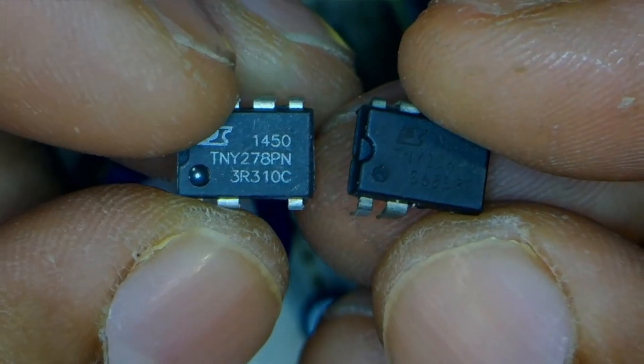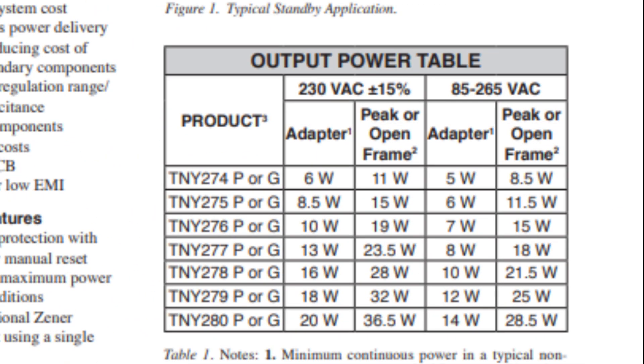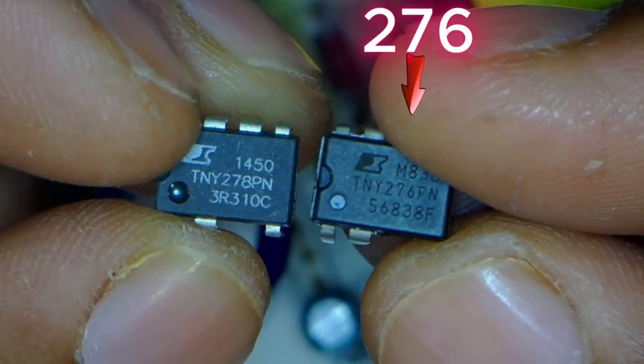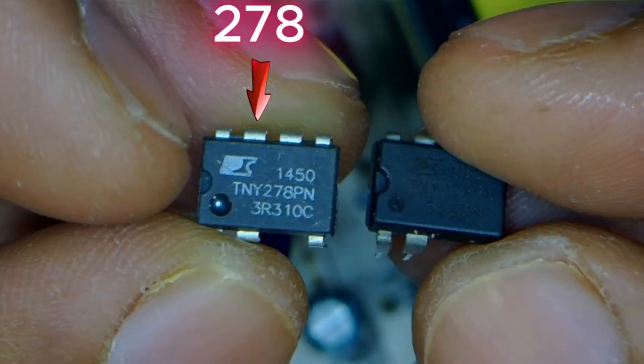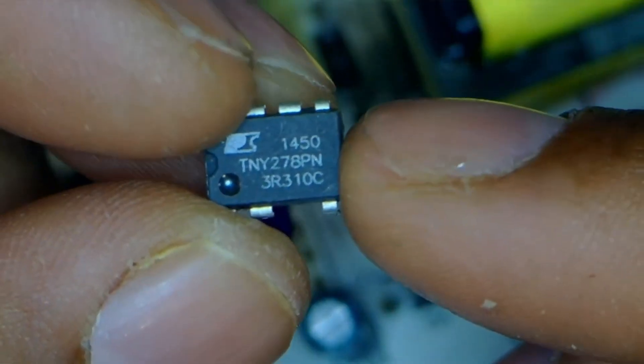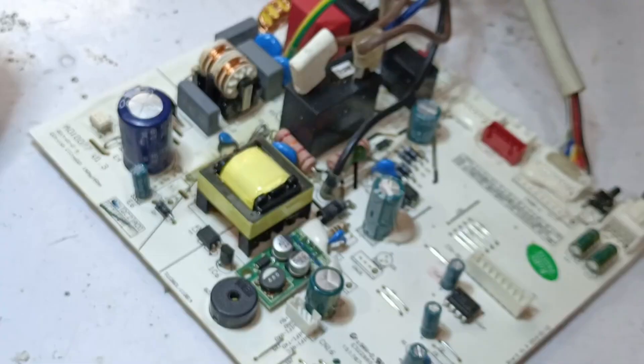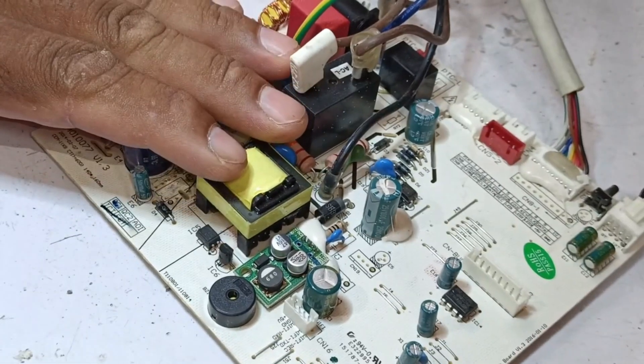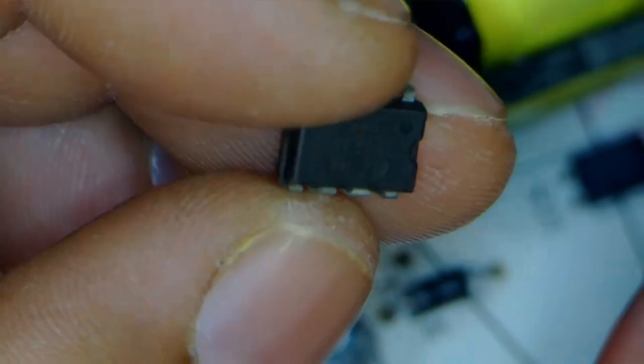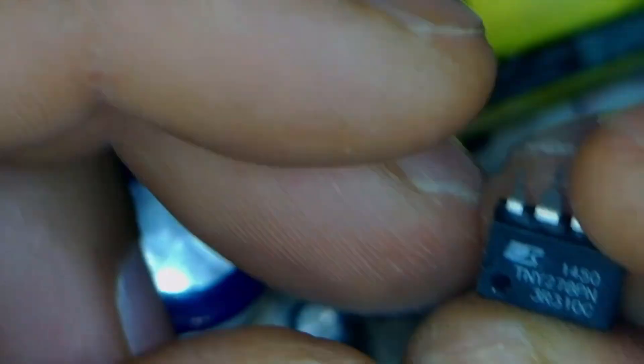If we check the data sheet, we'll see that both belong to the same family and perform the same function. However, TNY276PN is rated 10 watts, while TNY278PN is rated 16 watts, meaning the current bearing capacity of the new IC is higher. Sometimes, if a smaller IC is installed and the PCB has a higher capacity, the IC keeps burning out repeatedly, and it becomes difficult to understand why. That's why I'll install a higher rated IC this time.